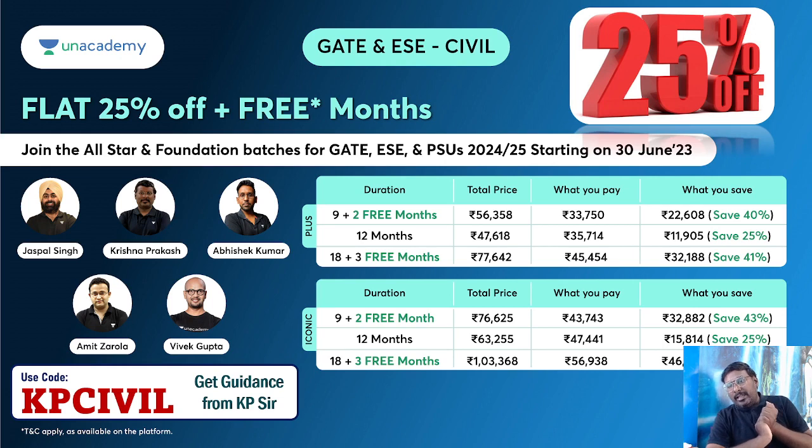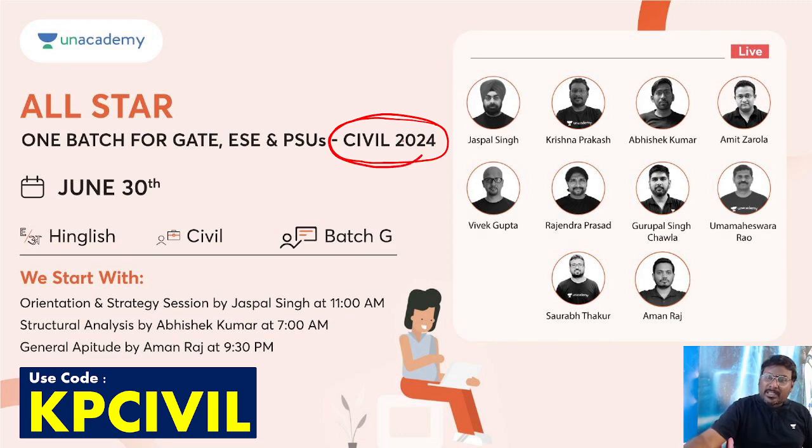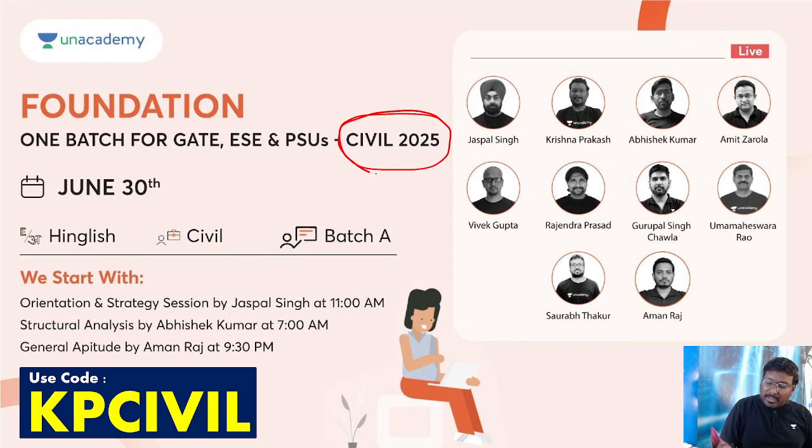Unacademy has 25% off plus additional months benefit. 9 months gets 2 months, 18 months gets 3 months additional. Use our universal code KPCIVIL. Join Unacademy, you'll get good preparation. Top educators are there. We are launching new batches for GATE and ESE - 2024 batch all star batch, 2025 batch foundation batch. You can have the best education at Unacademy and crack any examination.